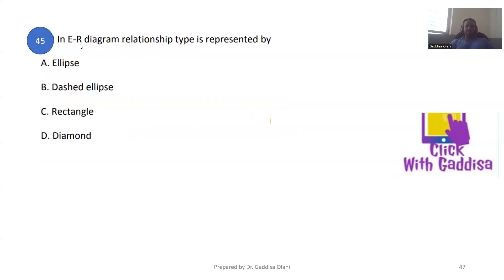In the ER diagram, the relationship type is represented by a diamond shape. The entity is represented by a node. We can represent a relationship between entities using a diamond. That's the relationship symbol.